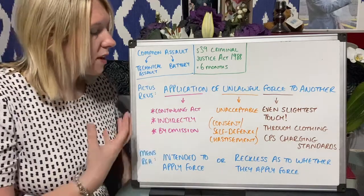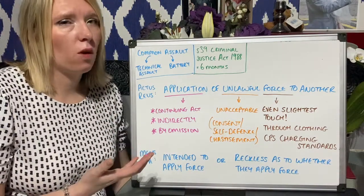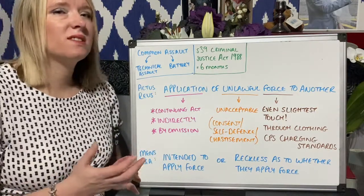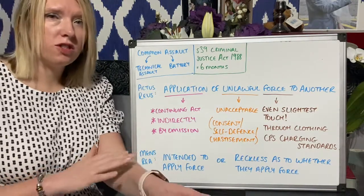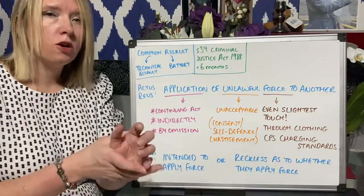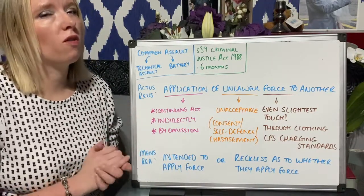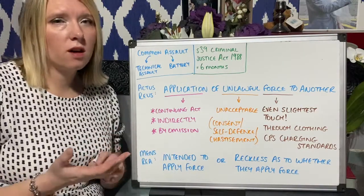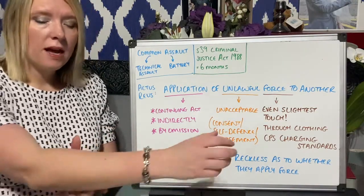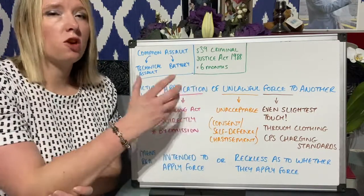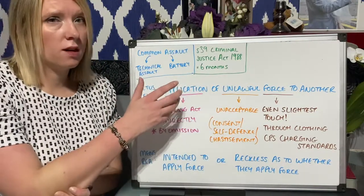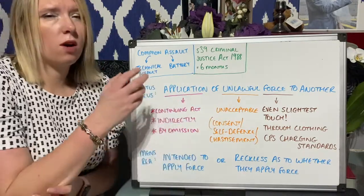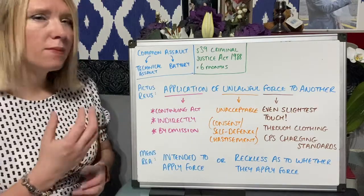In terms of what application of force means — how can you actually apply it to another person? Well, it can be even the slightest touch. Just touching someone's arm, for example, could potentially be a battery if it's an unwanted, unlawful application of force. In the case of Collins v Wilcock, for example, the policewoman took hold of the woman's arm to stop her walking away from questioning. That in itself would be a battery — what we call a direct application — but it can be done in other ways.